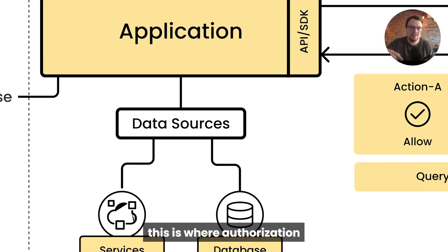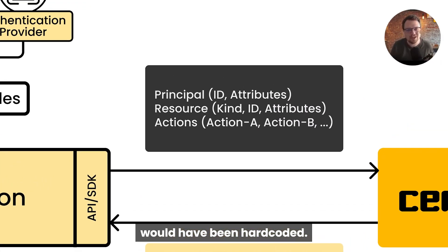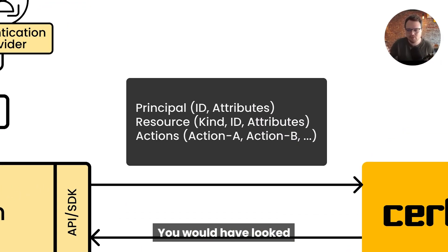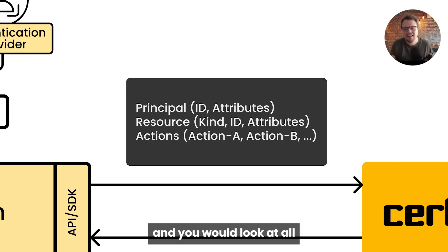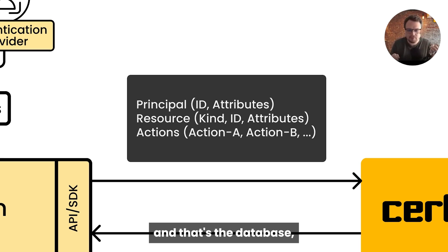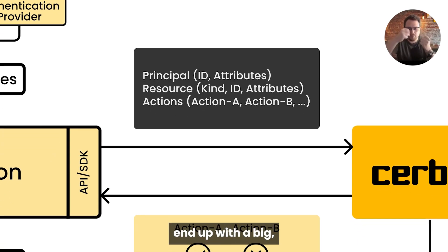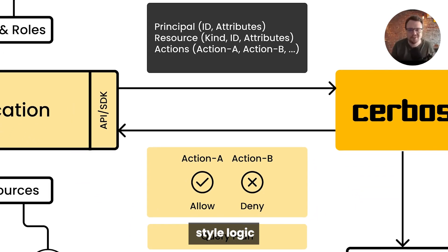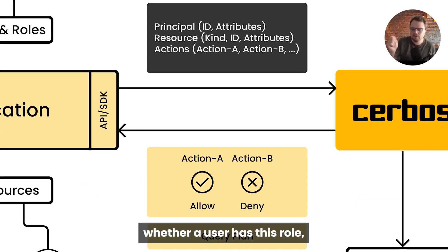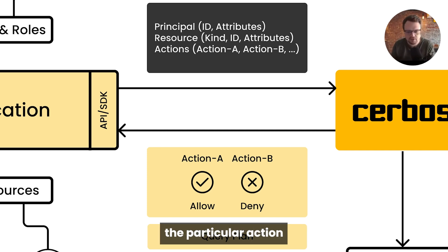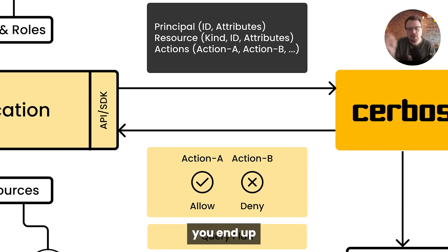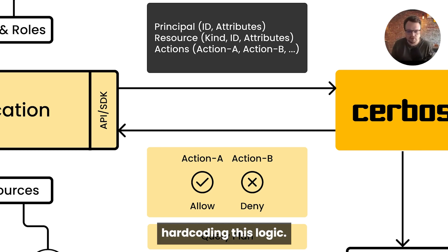And then normally, this is where authorization logic would have been hard-coded. You would have looked at that information about the principal or the user, and you would have looked at all the information about the resource that's come from the database. And then you'd end up with a big if-else, case-switch style logic to check whether a user has this role, then they should do the particular action. If they haven't got this role, are they the owner? And you end up hard-coding this logic.